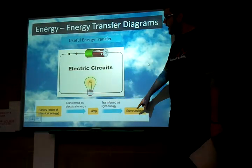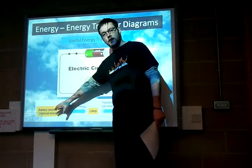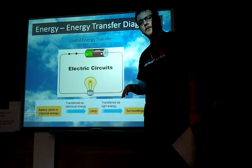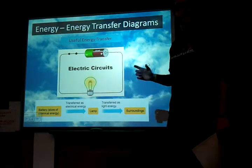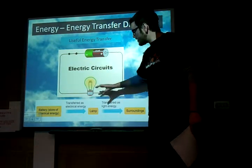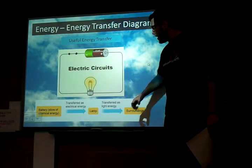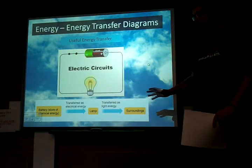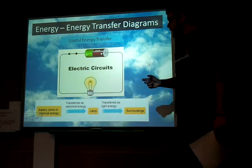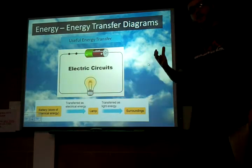Down here is our energy transfer diagram. At the beginning we've got our power source from our battery, and it's transferred as electrical energy. If you remember from lesson 1, we discussed the different types of energy, and electrical energy is one of those. So this electrical energy then goes into the lamp, which then transfers this energy into light energy. This light then transforms itself and goes into the surroundings. This diagram here actually only shows us what we call useful transfer — the electricity going into the lamp produces light, which is the main thing we want. So that is the useful transfer.